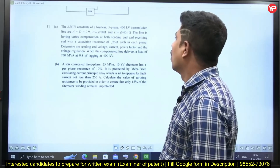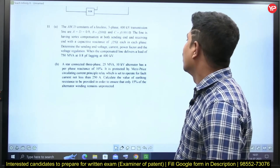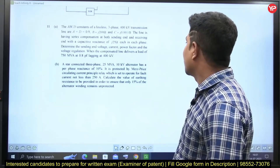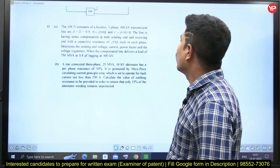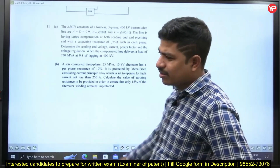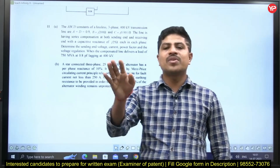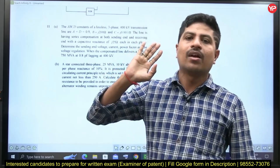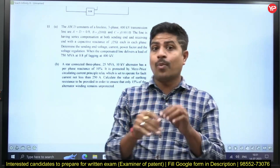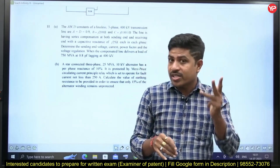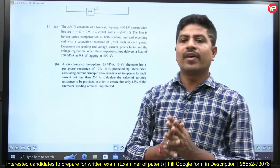This question is from power systems. The ABCD constants are given. When the transmission line delivers a load, determine the sending-end voltage, current, power factor, and voltage regulation. It is a simple direct question: VS = AVR + BIR, IS = CVR + DIR. If you know these things you can get the answer. But before that, what is A, B, C, D? What are the units? All these things you have to write very clearly.